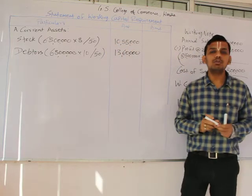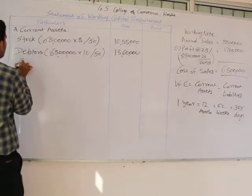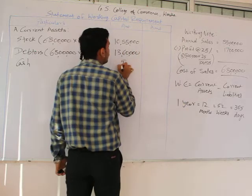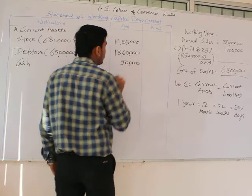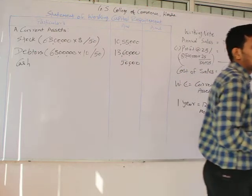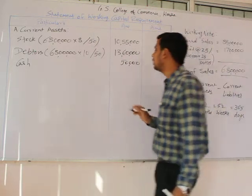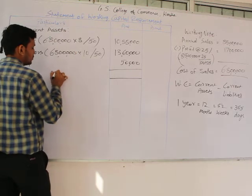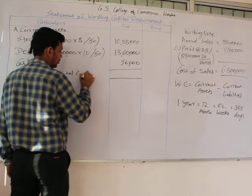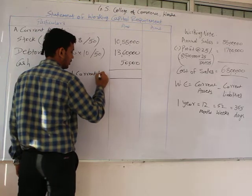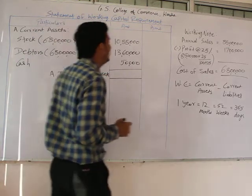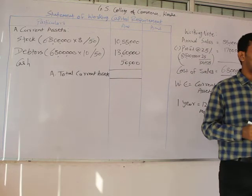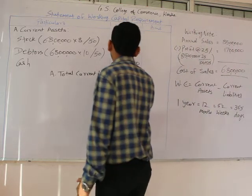The next item related to current assets is cash. The company has a tendency to maintain cash at a level of 50,000. So we have all current assets from the question. We can now make the total of our current assets: 10,88,000 plus 13,60,000 plus 50,000 equals 24,98,000.